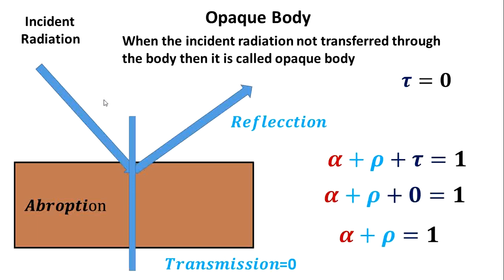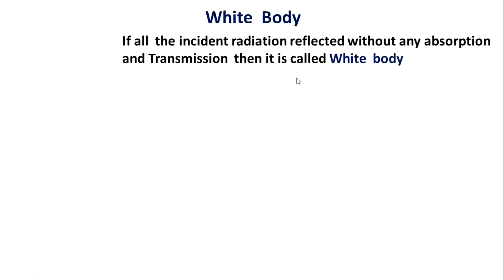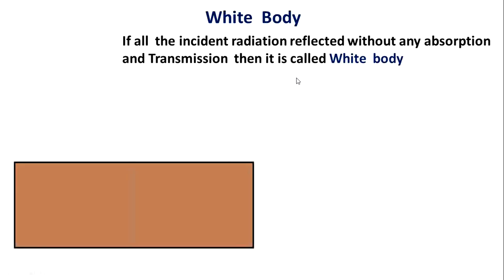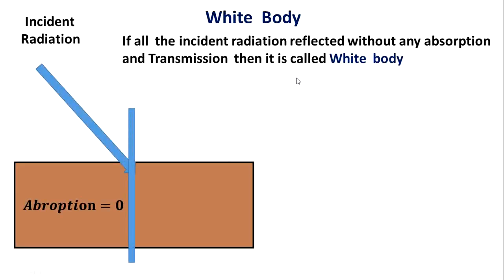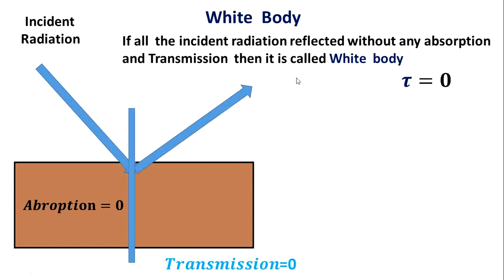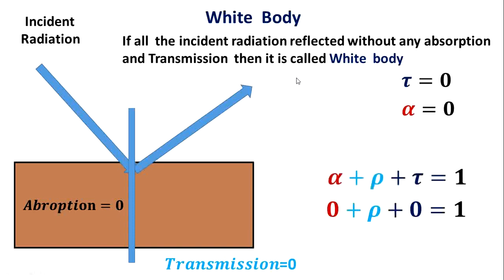White body: If all incident radiation is reflected back without absorption or transmission, the body is called a white body. Therefore, absorption equals 0, reflection equals 1, and no transmission. Hence tau equals 0, alpha equals 0, and rho equals 1.